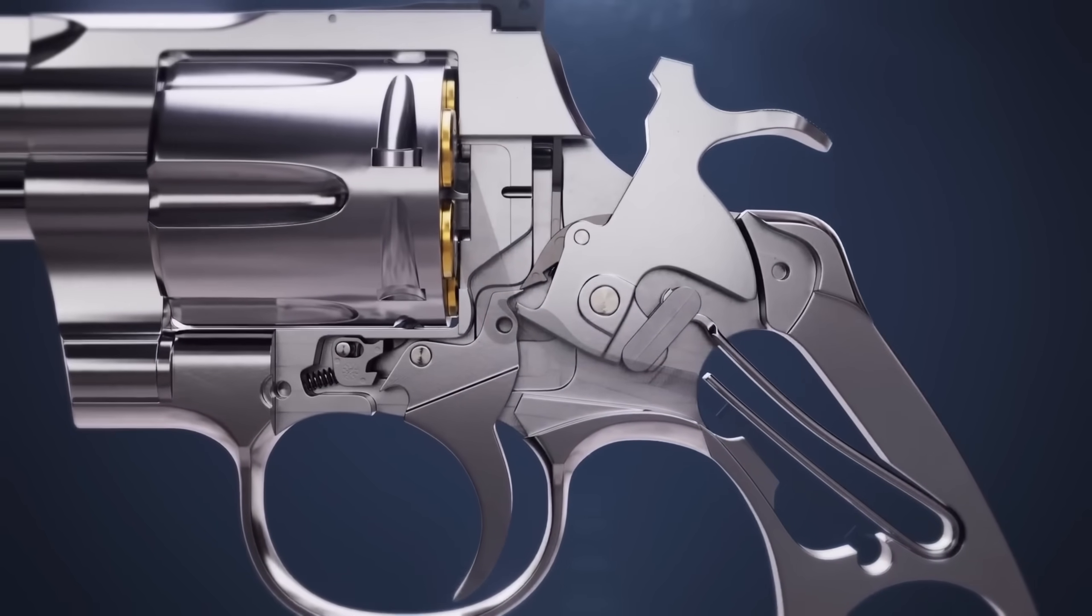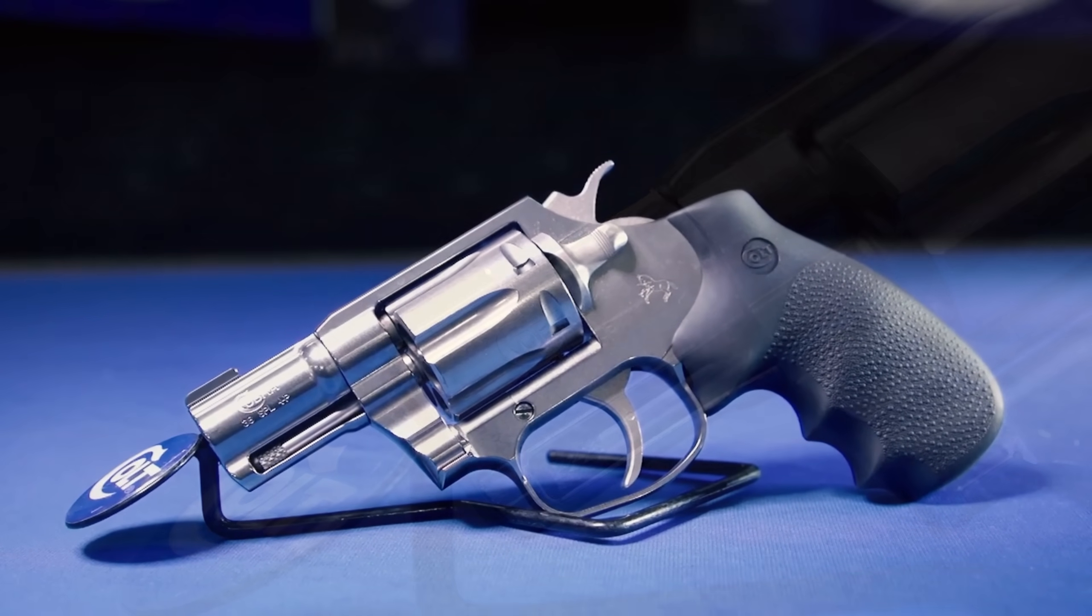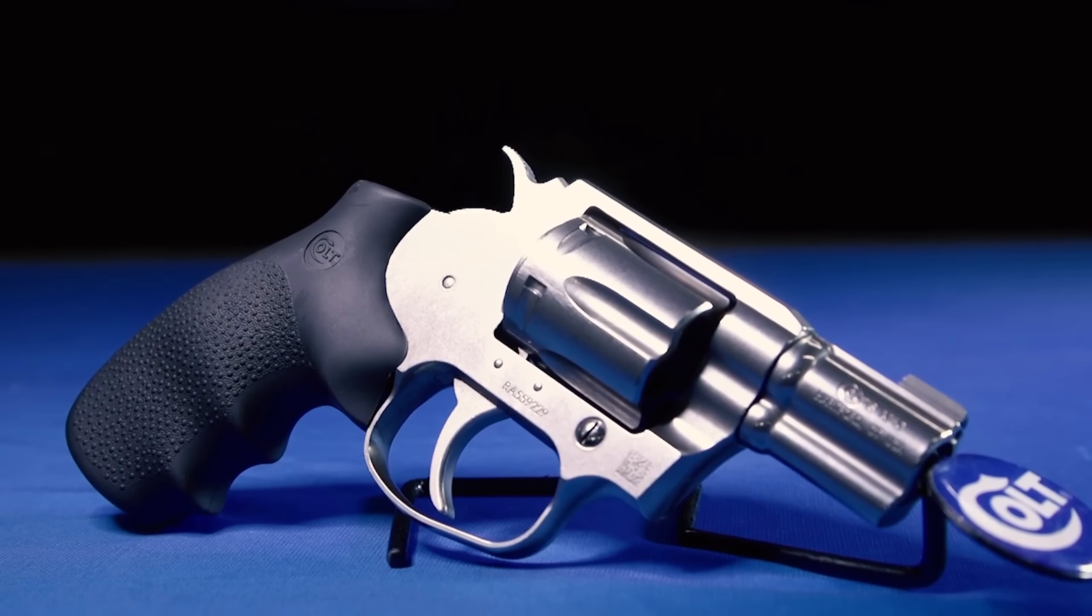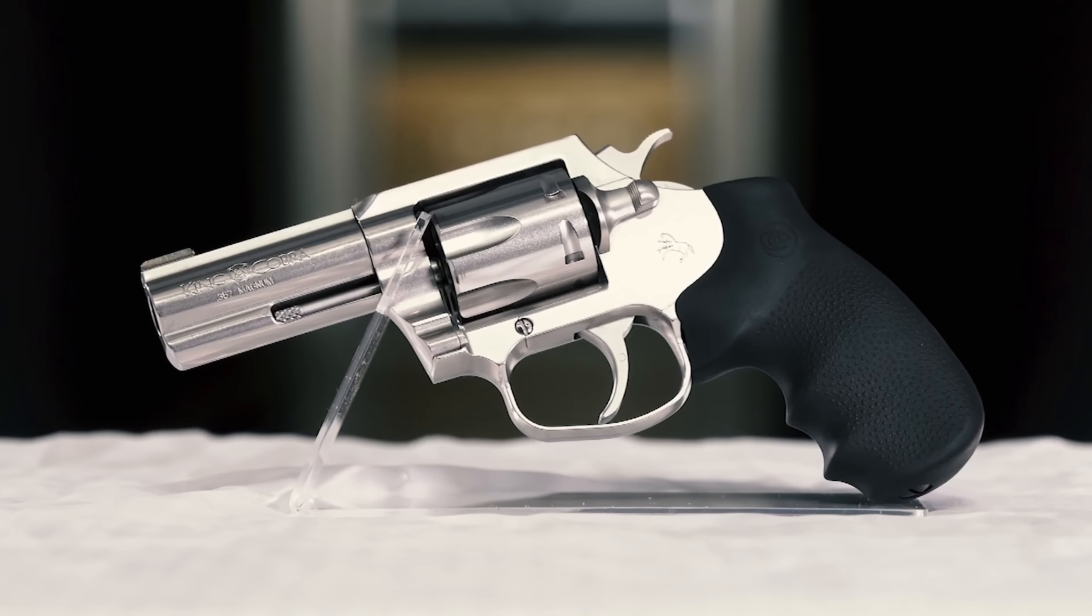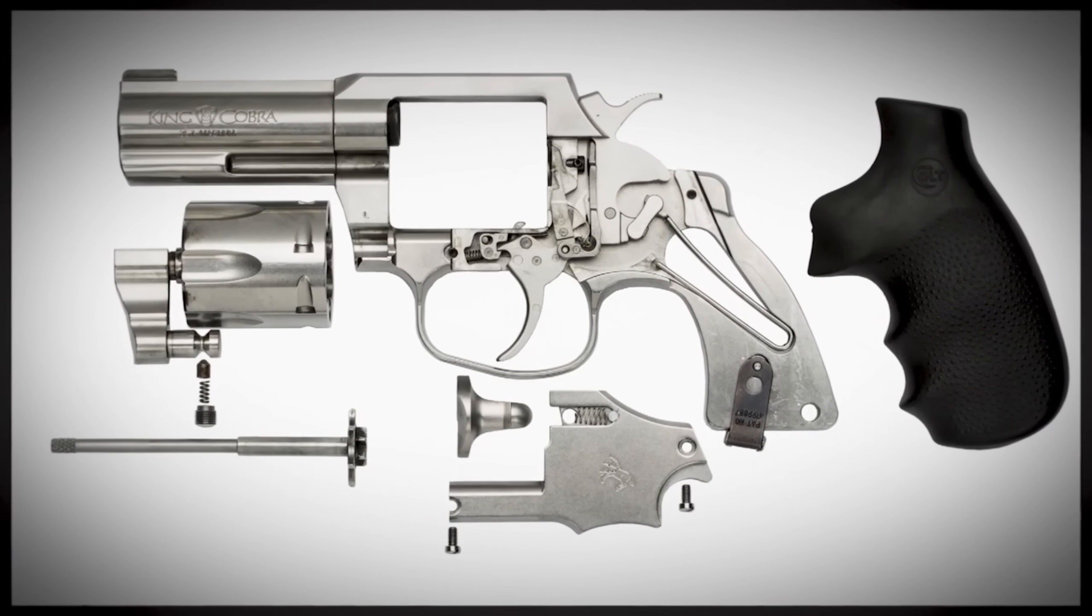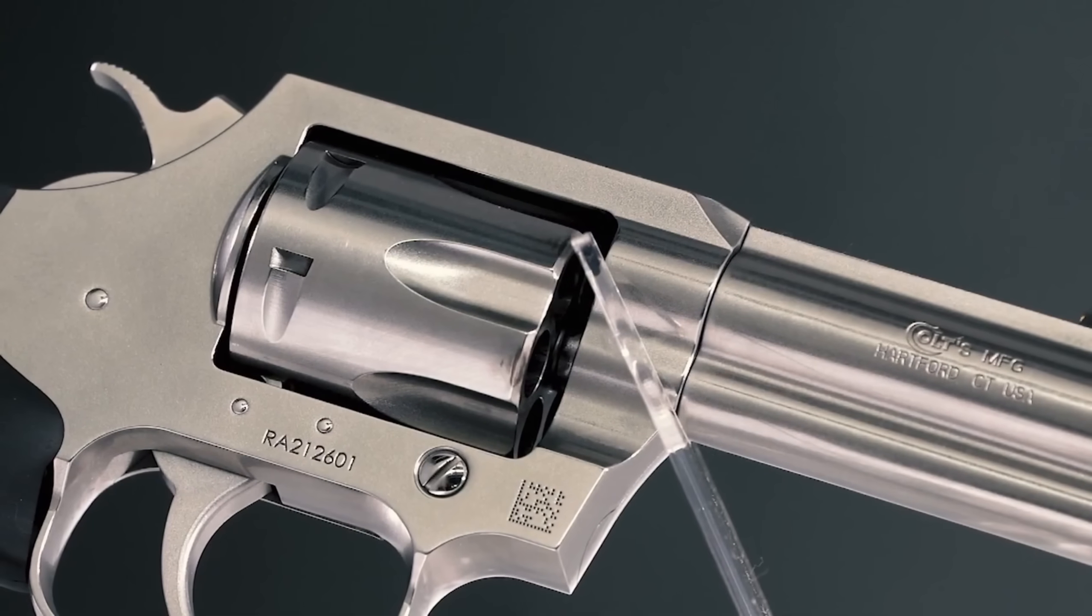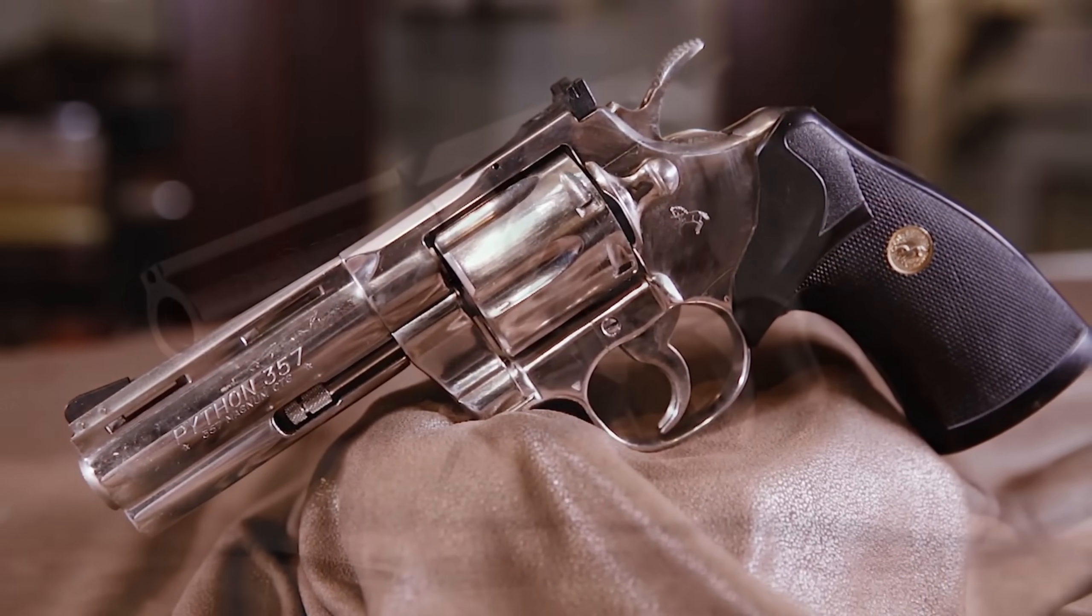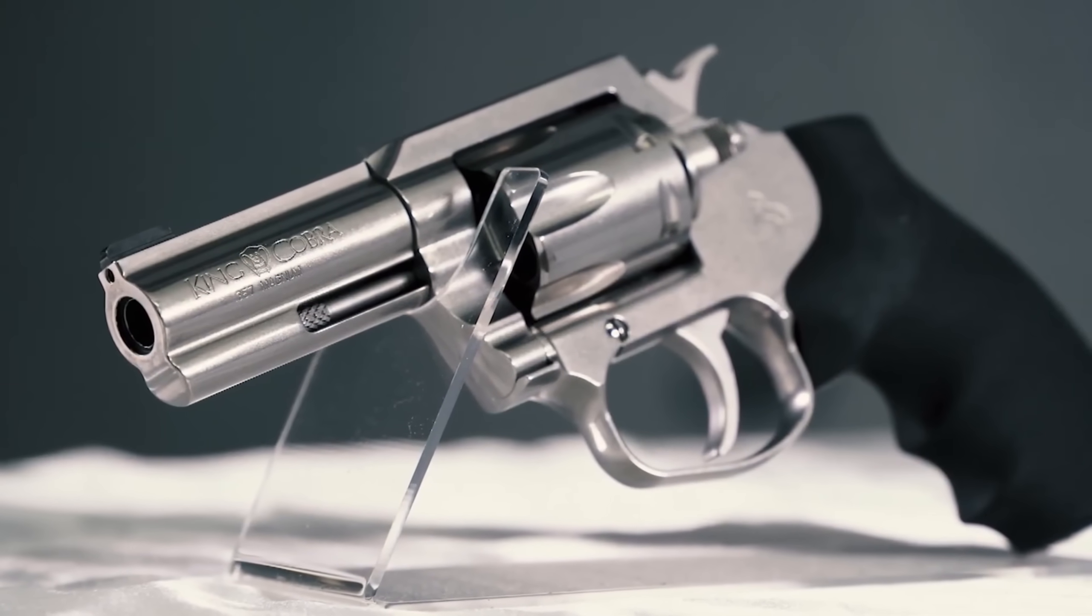Once stress relief is complete, the frame returns to the workbench for finishing. Technicians use grinders, polishers, and sometimes even hand tools to remove small burrs and smooth out the surfaces. They check all the critical dimensions again, measuring with micrometers and gauges to confirm the frame meets strict tolerances. Every edge and surface is refined until the frame is free of flaws and ready for assembly. This attention to detail isn't just about looks, it's essential for reliable operation and long-term durability.